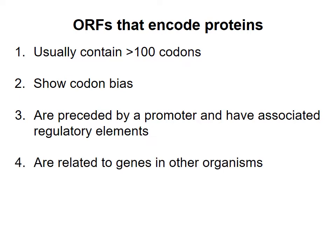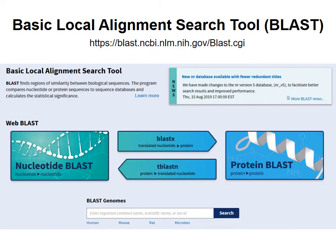Fourth, because of the evolutionary relatedness of different organisms, and because a lot of annotated genomes are available, for a genuine protein-encoding open reading frame it is usually possible to identify similar genes in other organisms. Software such as BLAST exists that allows you to compare a possible gene or protein sequence with nucleotide or amino acid sequences of known genes or proteins in other organisms. The program will look for similarities and report back with the highest matches it finds.